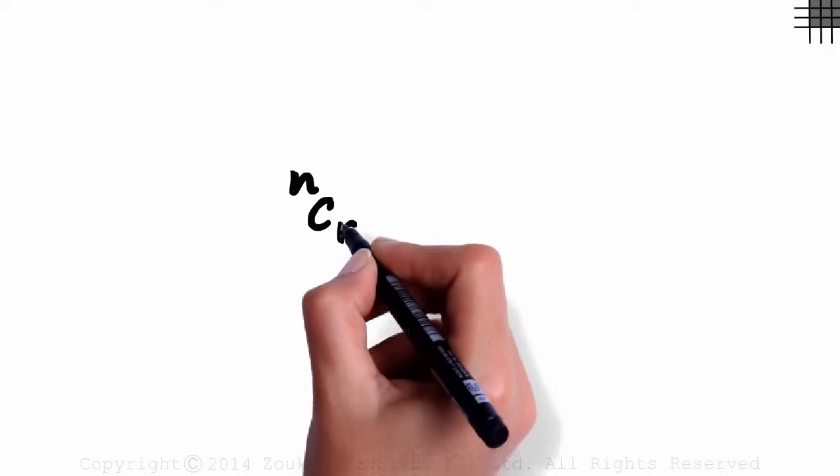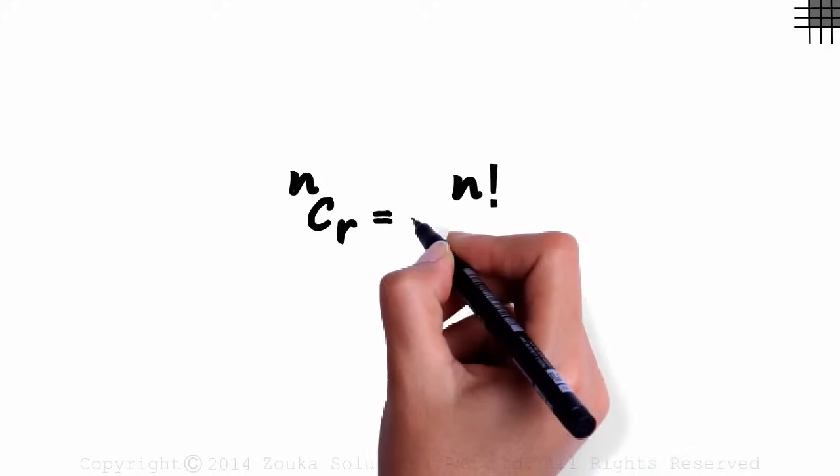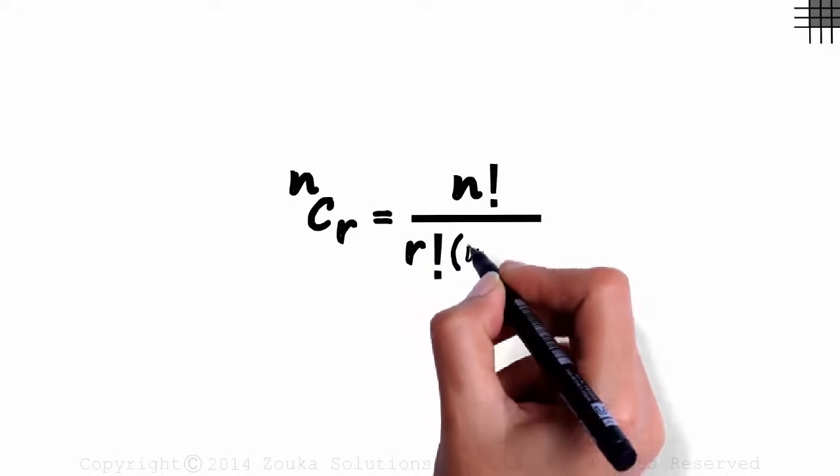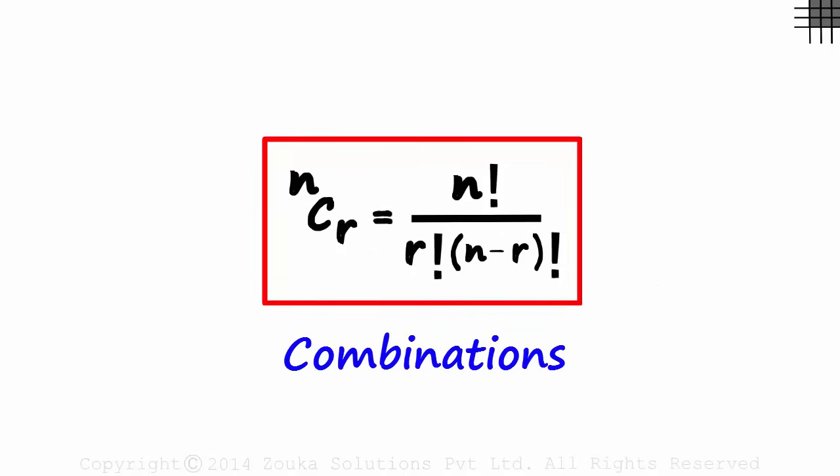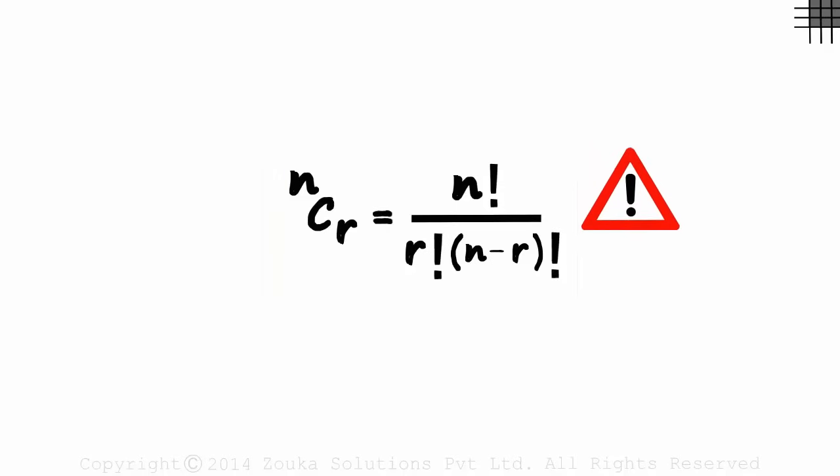The formula for NCR is N factorial divided by R factorial times N minus R factorial. What is this? This is the formula for combinations, but it is not the best way to understand it.